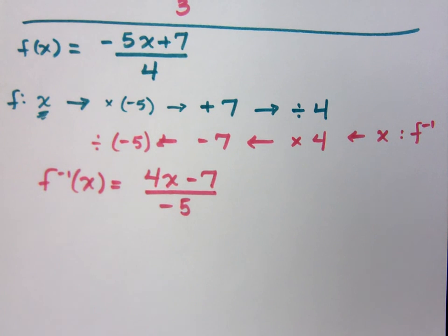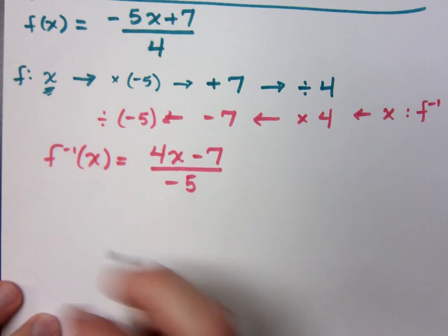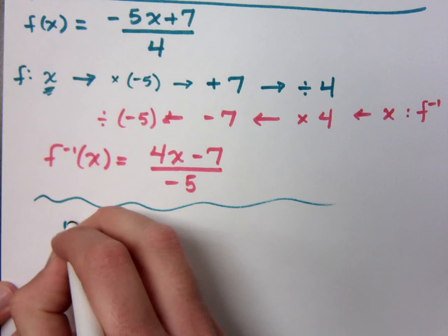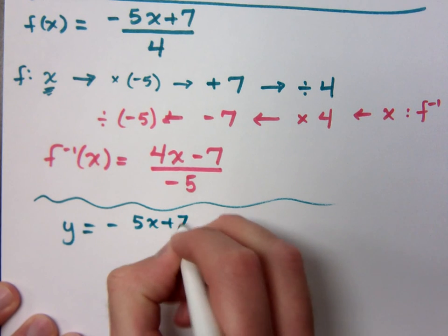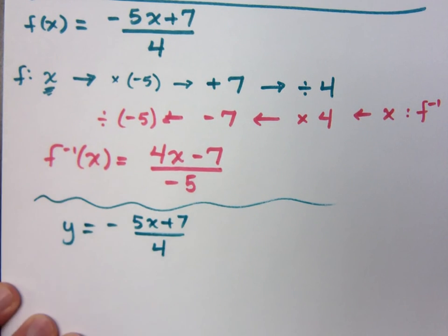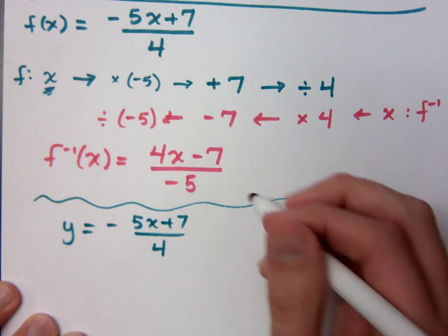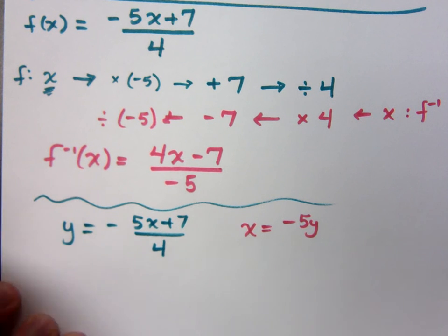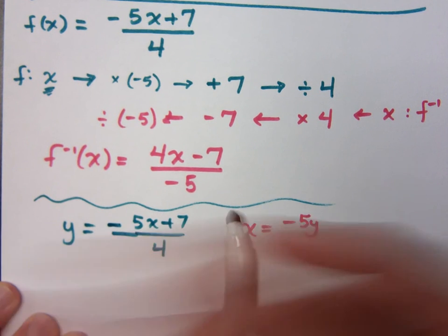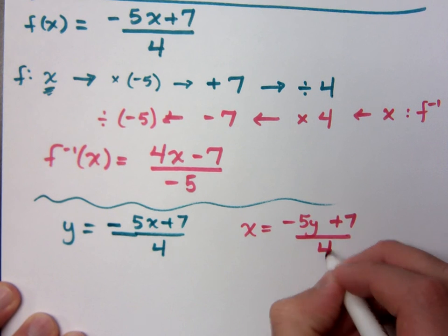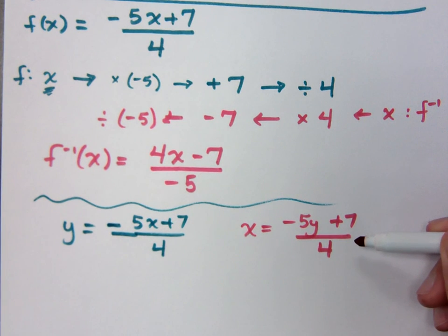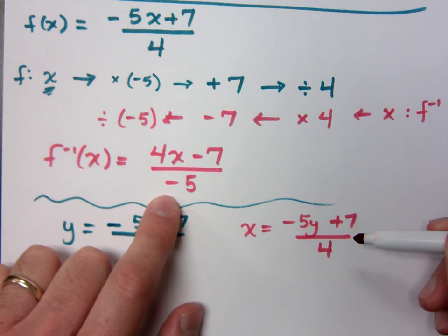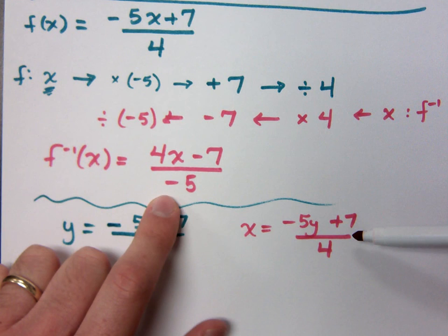Now, if you're not quite sure how I did that, you can always go and do it the other way, where I take my original function and I rewrite this to say y equals negative 5x plus 7 divided by 4, and then rewrite the y's to be x's and x's to be y's. So it would be x equals negative 5y plus 7 over 4. If you solve this expression for y, you're going to get this exact same thing. You solve this guy here in pink for y, you will get this guy.